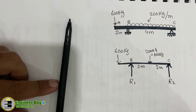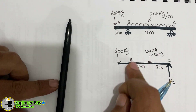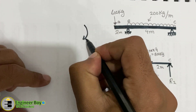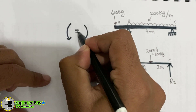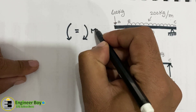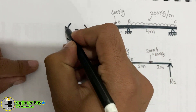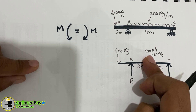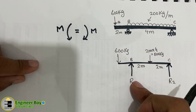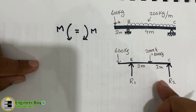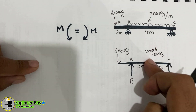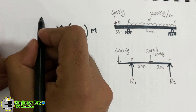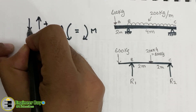So the equivalent point load is 800 kg. Now we determine the reactions. Clockwise moment equals anti-clockwise moment — these are equilibrium equations. This is a determinate structure with two unknowns and three equilibrium equations, so we can solve it. Upward forces are positive; downward forces are negative.